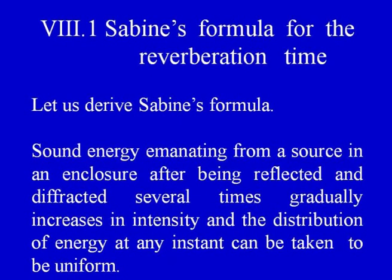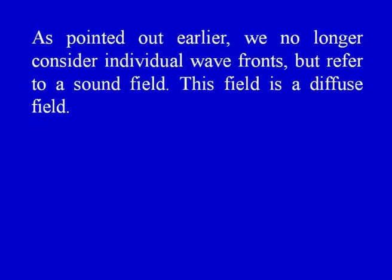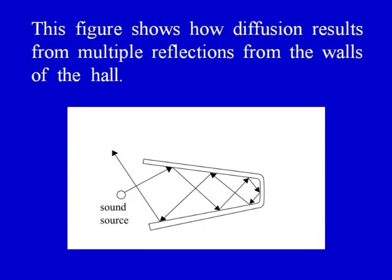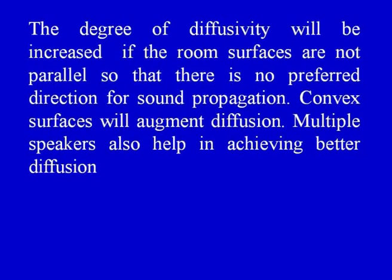Let us derive Sabine's formula. Sound energy emanating from a source in an enclosure, after being reflected and refracted several times, gradually increases in intensity and the distribution of energy at any instant can be taken to be uniform. We refer to a diffuse sound field. The degree of diffusivity will be increased if the room surfaces are not parallel, so that there is no preferred direction for sound propagation. Convex surfaces will augment diffusion, and multiple speakers also help in achieving better diffusion.